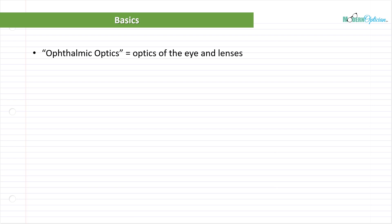Ophthalmic optics refers to the optics of the eye and lenses. In our case, that's specifically what we do as opticians — we have to understand how the eye processes light, and also how lenses alter the path of light in order to correct vision. In a nutshell, that's what an optician does. In the last module, I talked about how important understanding ocular anatomy is, and that's for the same reason why ophthalmic optics is so important.